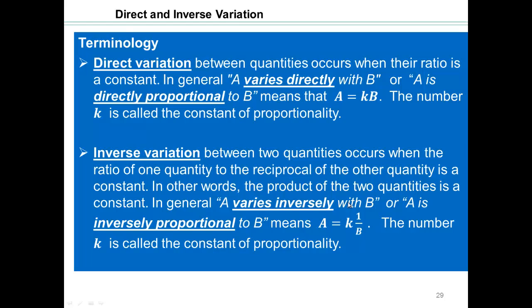So a varies inversely with b, or a is inversely proportional to b, means a equals some constant times 1 over b, or that a times b is a constant. The number k is called the constant of proportionality in both cases.